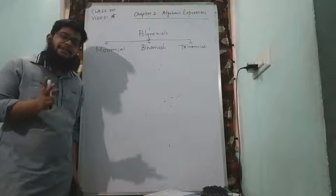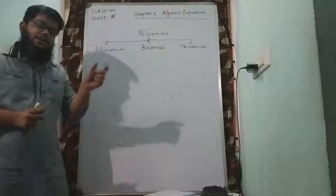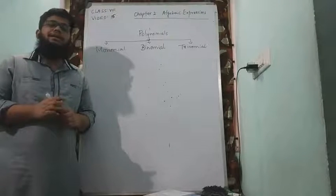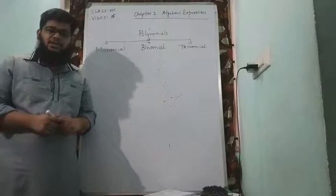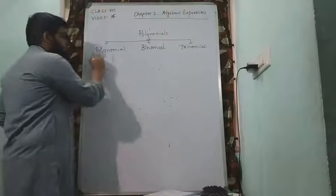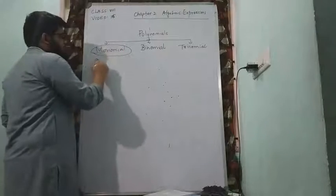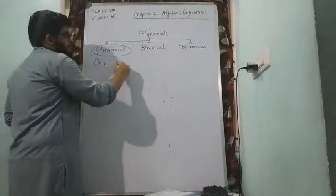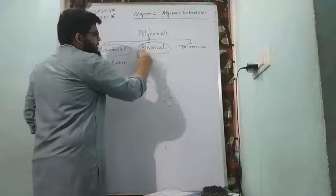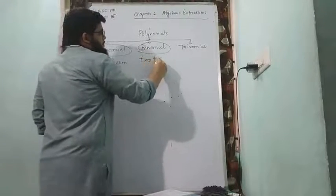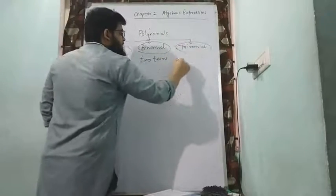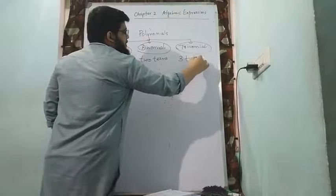So we have seen something called terms. There can be one term, two terms, three terms like that. In an algebraic expression if we have only one term then it will be called monomial. If we have two terms it will be called binomial. And if we have three terms it will be called trinomial.